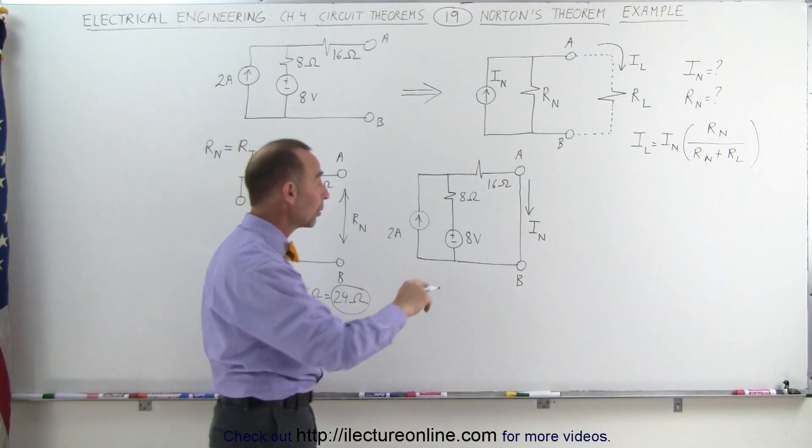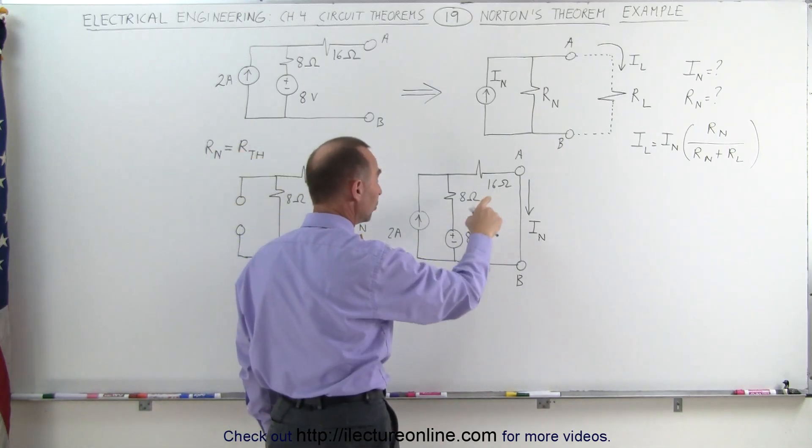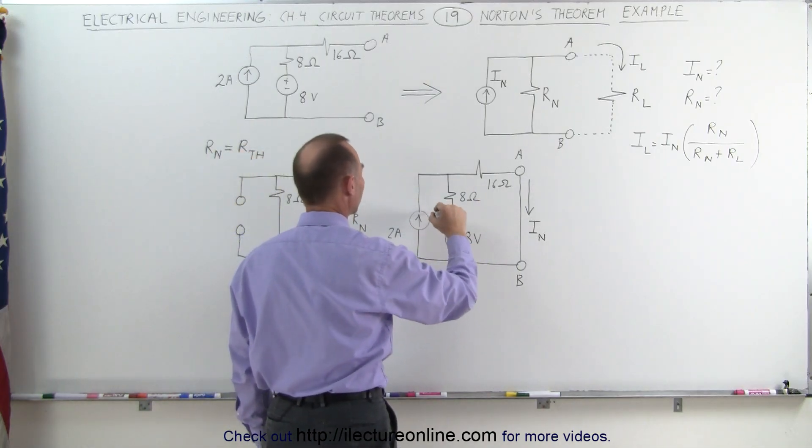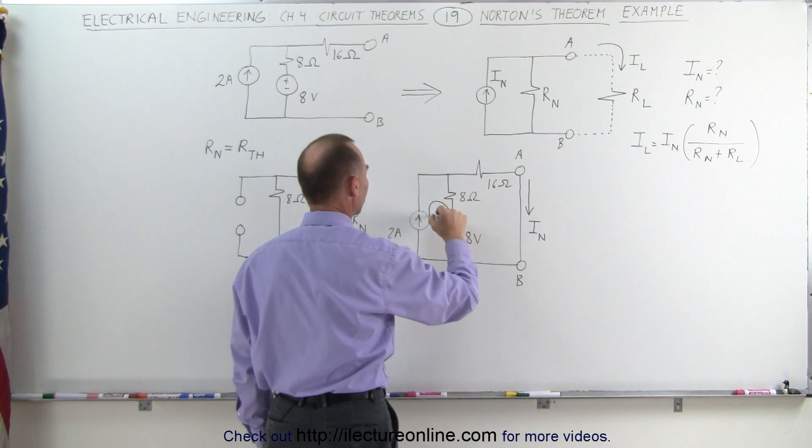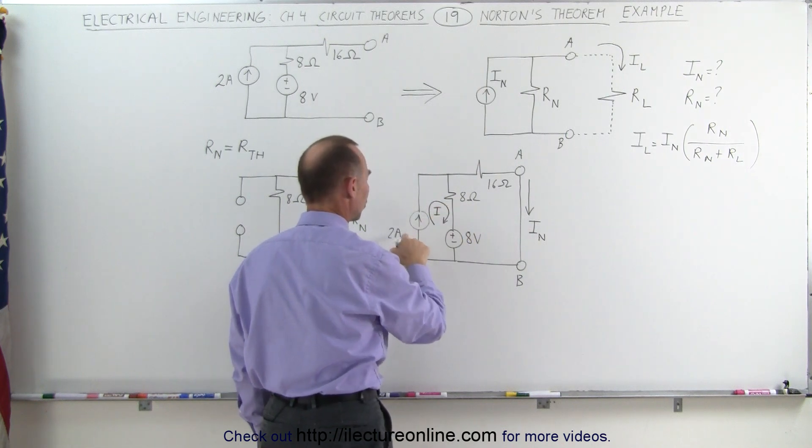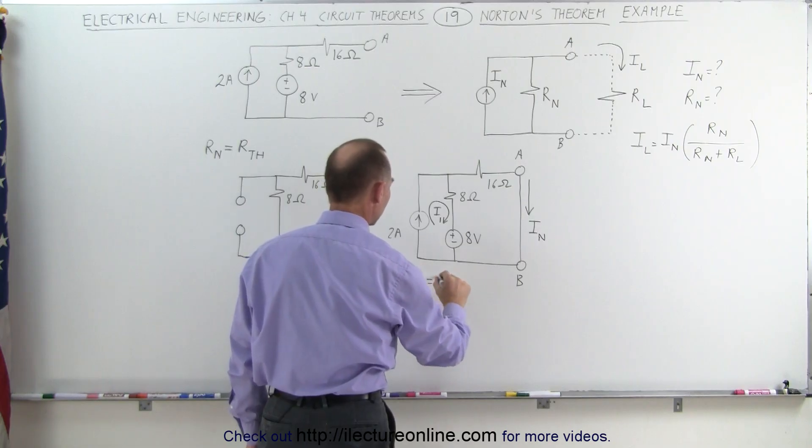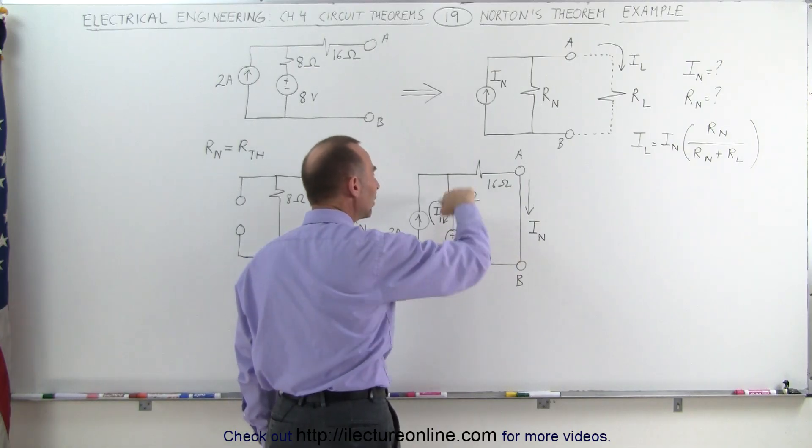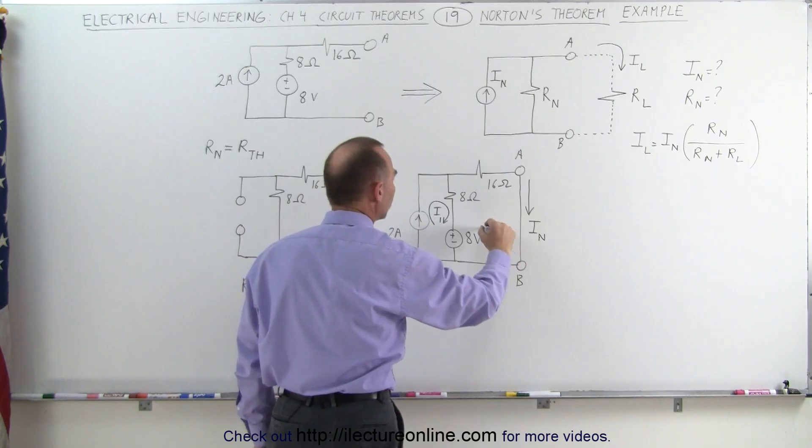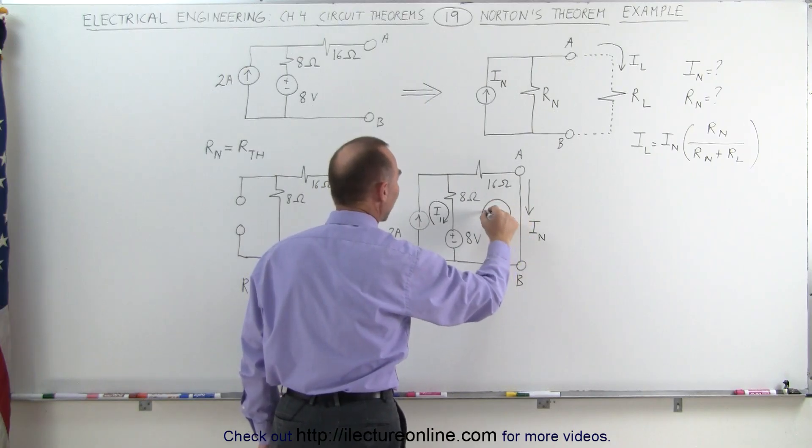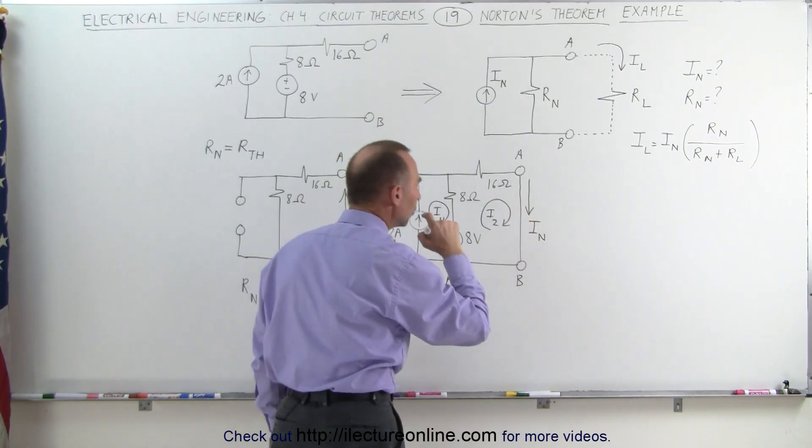How do we find that? Well simply we're going to add up the voltages around each loop. For the first loop we can imagine that the current around the first loop is going to be equal to the 2 amp source. So this is I1, we can say that I1 must equal 2 amps. But now we're going to add up the voltages around loop 2,